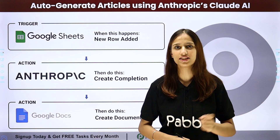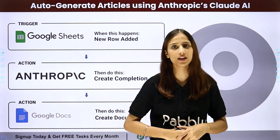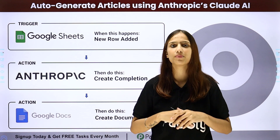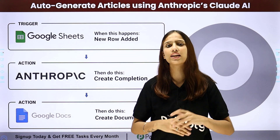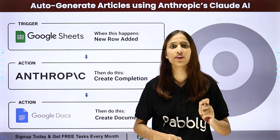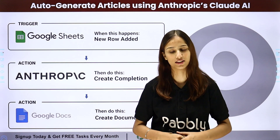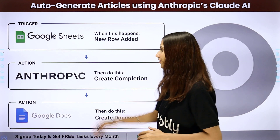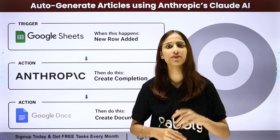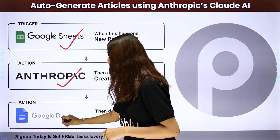Hello everyone, welcome back to Pabbly. In today's video we will understand how to auto-generate articles using Anthropic Claude AI. Whenever a new title is added in a new row in my Google Sheets, I wish to create an article automatically using Anthropic. Once the article is generated, I want to create a document with the same article. To do this, I need to build an integration using Pabbly Connect, where my trigger application will be Google Sheets and my action applications will be Anthropic and Google Docs.